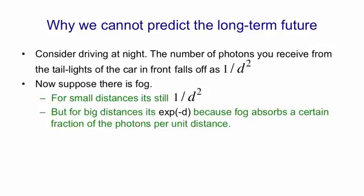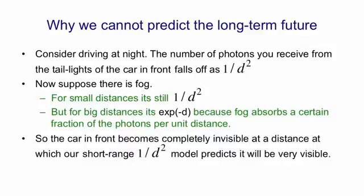So for small distances, fog looks very transparent. But for large distances, it looks very opaque. So the car in front of us becomes completely invisible at a distance at which our short range model, the 1 over d squared model, predicts it will be very visible. That causes people to drive into the back of cars in fog. It kills people.